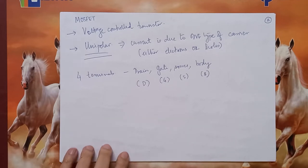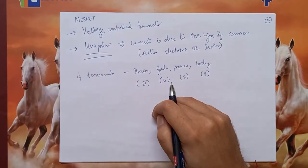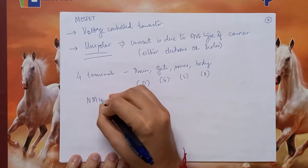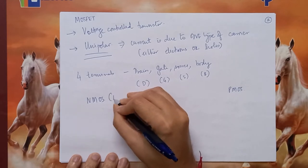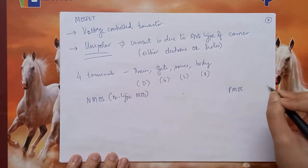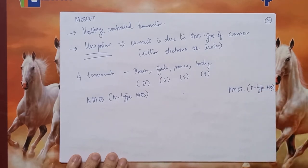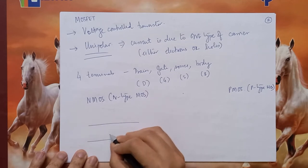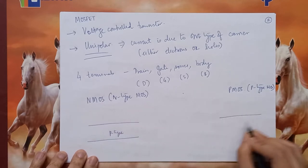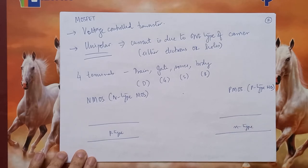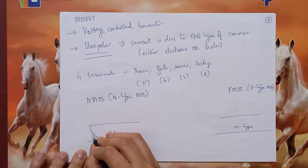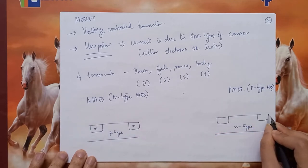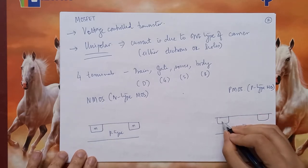Just like the BJT is of two types — NPN or PNP — the MOSFET also comes in two types: an N-type MOSFET (NMOS) and a P-type MOSFET (PMOS). In the NMOS, the body is of P-type, and in the PMOS, the body is N-type. In the NMOS, there are two N-type semiconductor layers (source and drain regions). In the PMOS, there are two P-type semiconductor layers.